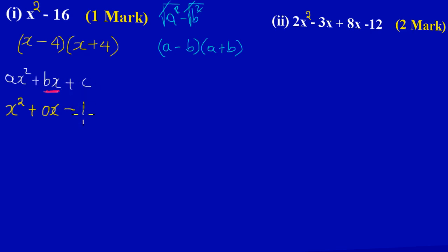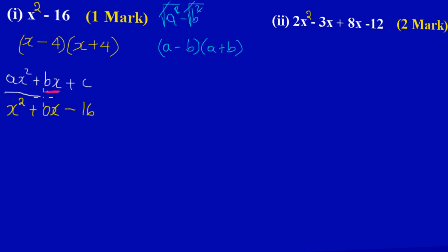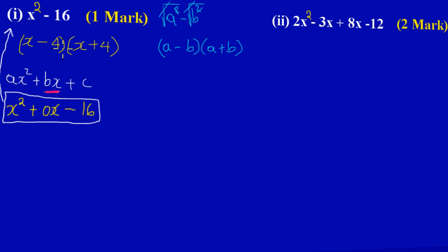What I have here in this rectangular box and the original problem up there are the same things — exactly the same — because this is x squared, I have no term in x in the middle (zero x, so zero), and then I have my minus 16 at the end, which matches the negative 16 there. So basically, my friends, you can use the AC method to factorize this quadratic.